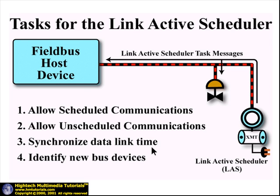Next, we have data link time synchronization. This must be done to ensure the internal clock of each field and host device is synchronized to within a one millisecond accuracy. The clock in each device is not only used to sync data communications over the bus, but is also key in scheduling activities internal to each device. This includes, for example, the scheduling of function block execution, which we'll discuss later in this tutorial.